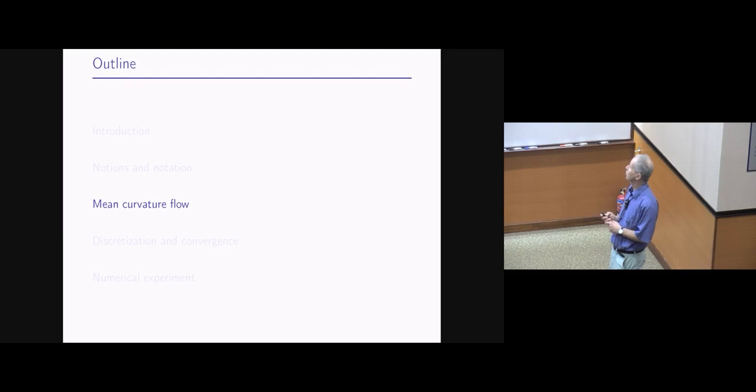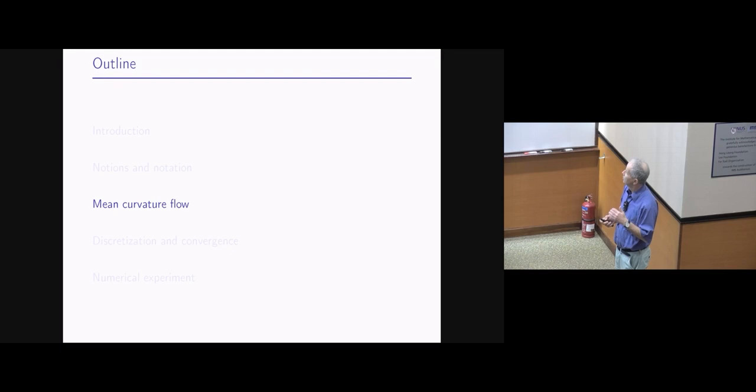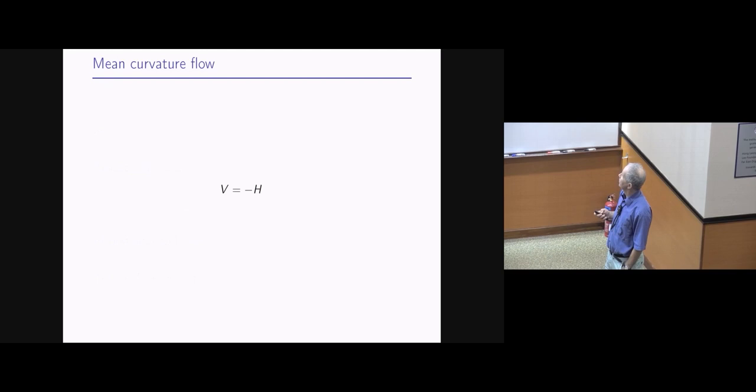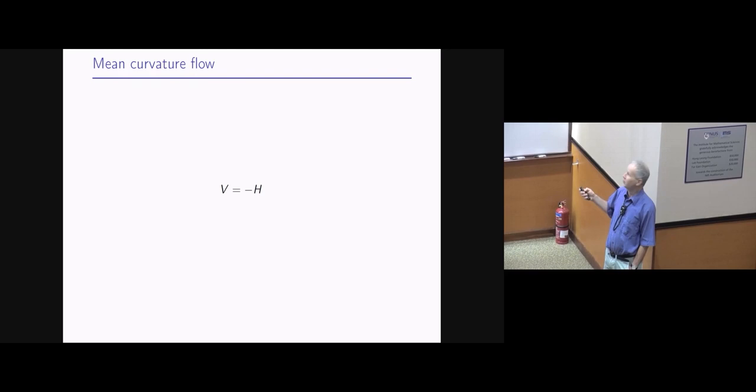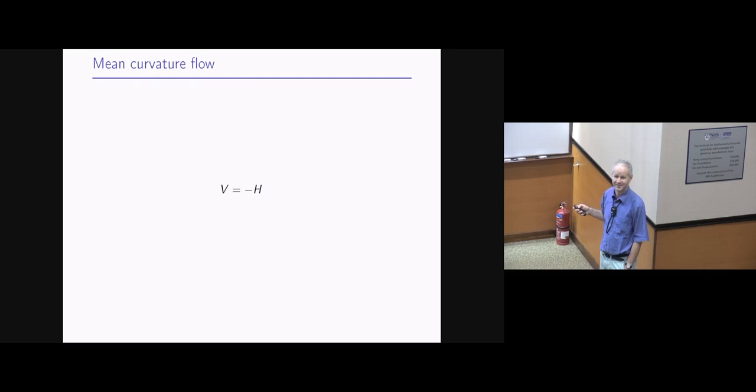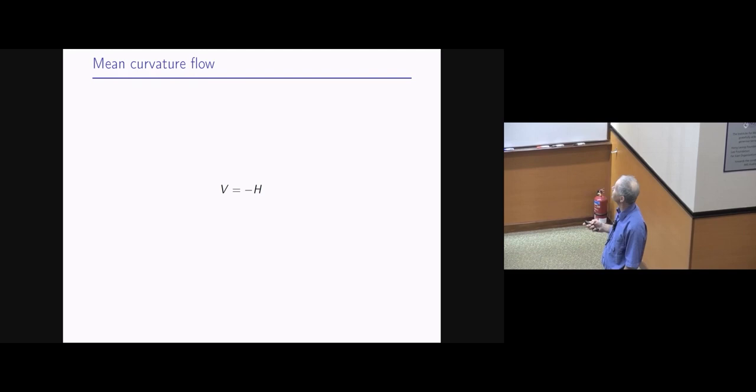So these are the notions with which we work. And here is mean curvature flow in all its beauty: the normal velocity V equals the negative mean curvature, V = −H. It is a nice equation. But how do you discretize it? That is not so obvious.